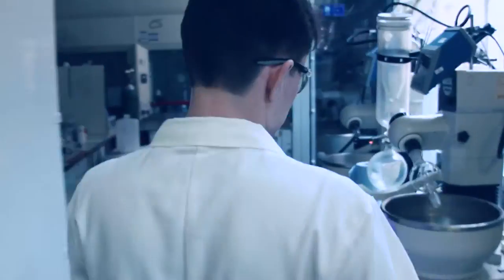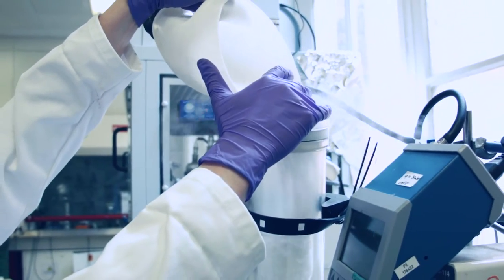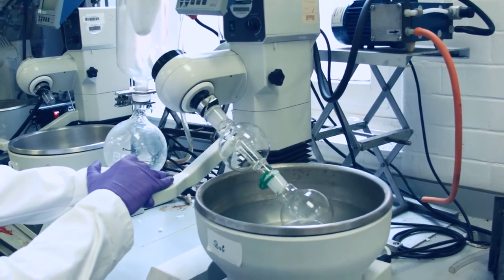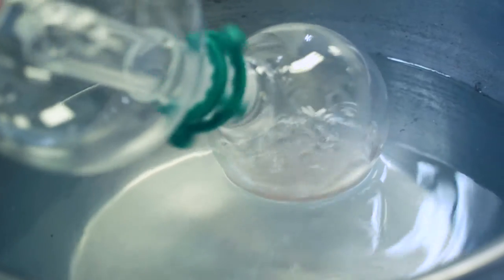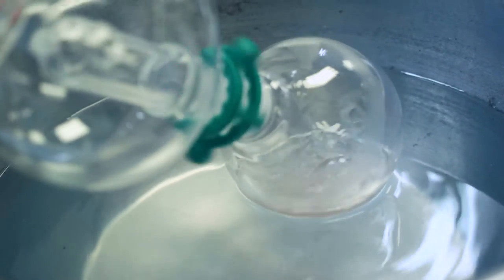Next, I want to remove the acetone so I can see how much material we've got from the note. I'm using a rotary evaporator to rapidly remove the solvent. Because this machine uses a vacuum, I only need to heat the sample to 40 degrees celsius before it begins to boil.